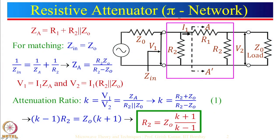We will start with the resistive attenuator, and the network shown here is a pi network. You can see that there are three resistors: R1, R2 and R2. If you see, this network looks like a pi shape, that is why it is known as a pi network. One of the main properties of the attenuator is that the input side as well as the output side should be matched with 50 ohm, or Z0, and it should provide attenuation from port 1 to port 2 by a factor of k.